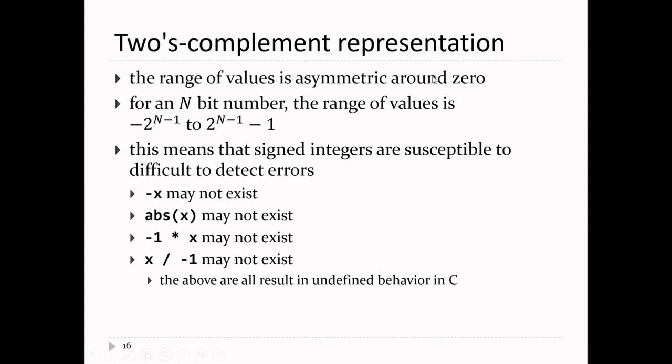The range is asymmetric. The most negative value's magnitude is bigger than the most positive value. If you think about that, it's going to cause some problems because you can multiply, divide, add, and negate integer values.